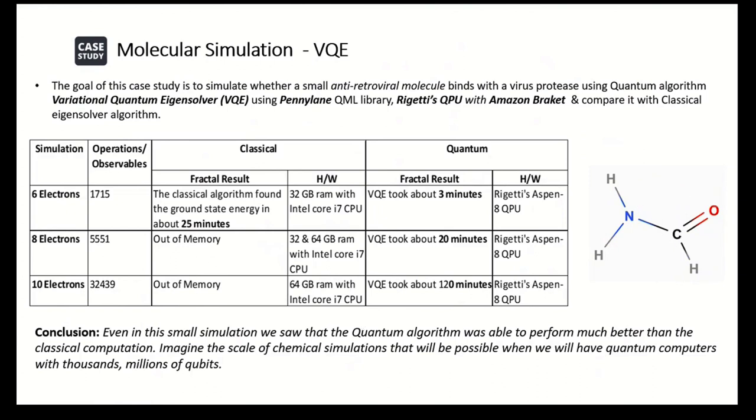Now we can conclude that even in this very small simulation we saw that quantum was able to perform much better than the classical computation. Imagine the scale of chemical simulation that will be possible when we have full scale quantum computers with thousands and millions of qubits. This will help us unravel all the secrets of all the sciences, all the quantum world. That's about it. Thank you for listening.